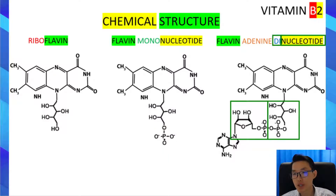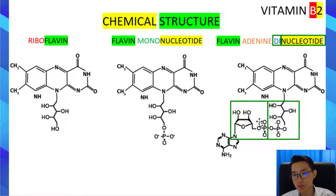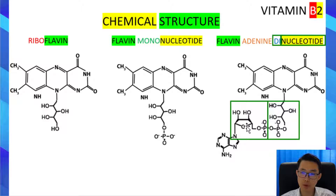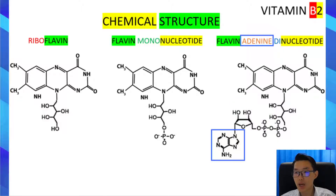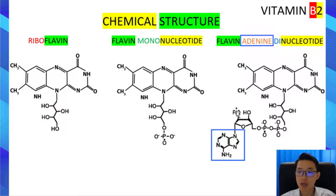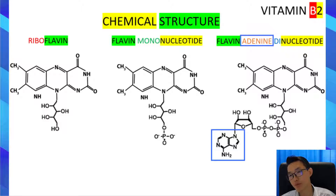Next we have flavin adenine dinucleotide. As the name implies, 'di' refers to two, because it has two nucleotide groups, as shown in the two green boxes. The adenine group refers to the structure contained within the blue box. Therefore it is called flavin adenine dinucleotide. This is just for understanding purposes only — there is no need to memorize, and don't panic.